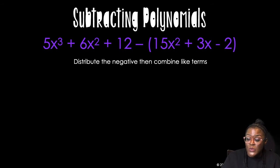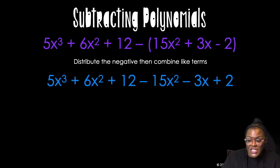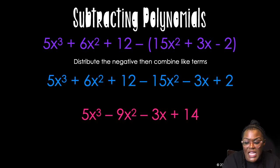Hopefully you paused the video. So I'm going to go ahead and distribute that negative to the 15, to the 3, and then to the negative 2. Remember when you distribute a negative to a negative, it becomes positive. So now I'm going to combine my like terms. And that's what I get. So the 5x cubed comes to the front. 6 minus 15, cause those are like terms. I get negative 9. And then I get 12 plus 2, it's going to give me 14. Bada-bing, bada-boom, baby.